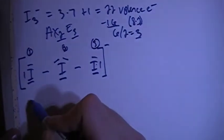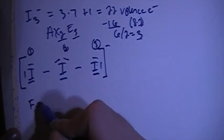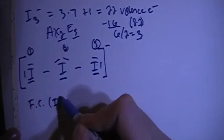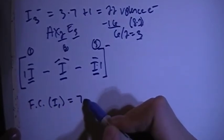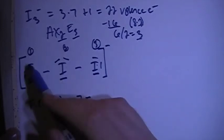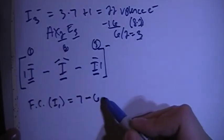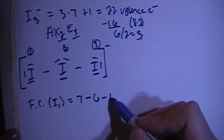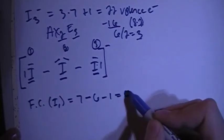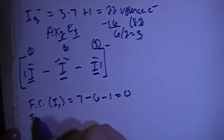The formal charge for iodine one is going to be seven valence brought in minus two, four, six non-bonding electrons minus one bond, which is going to equal zero overall formal charge. The formal charge for iodine two is going to be seven valence brought in minus two, four, six non-bonding electrons minus two bonds.